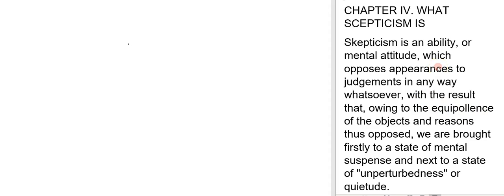So looking closely at the text here we see that he's defining skepticism as an ability or mental attitude which opposes appearances to judgments in any way whatsoever. So we know that two key things are being put in opposition by Sextus here and those two things are appearances and judgments.